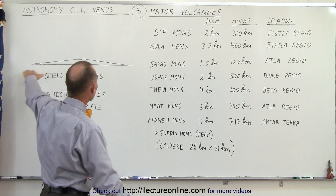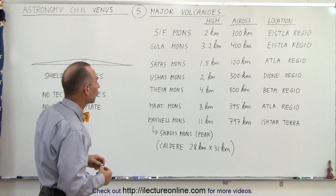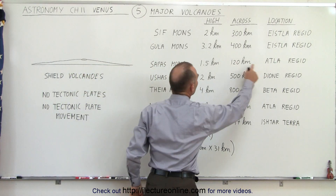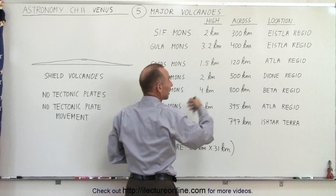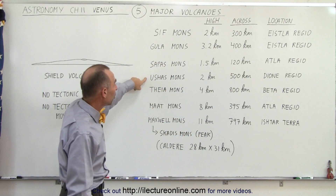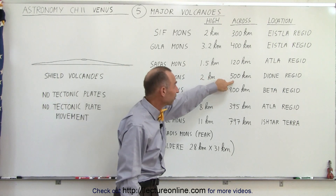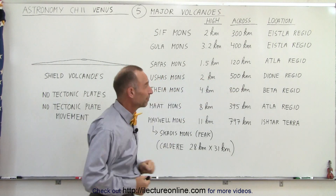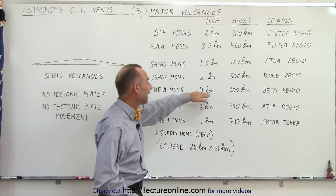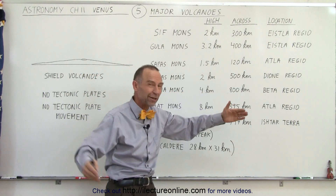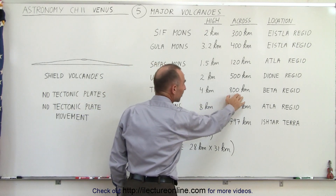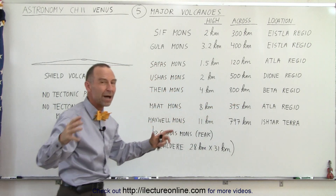The bases of these mountains are very, very large. We also have a mountain called Sapas Mons, in the Atla region, about 1.5 kilometers tall and 120 kilometers across — that's about 75 miles across. We have Ushaz Mons, 2 kilometers tall and 500 kilometers across — that's 300 miles. We have Thea Mons, 4 kilometers high and 800 kilometers across — that's 500 miles, about the size of the state of Montana — one single mountain. Imagine the size of these volcanoes.